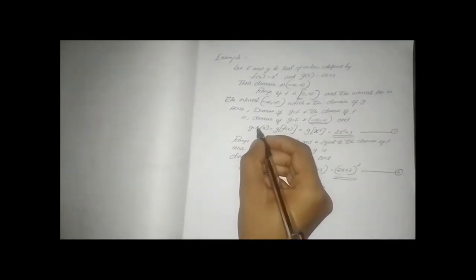So the domain of g∘f is (−∞, ∞). Now, g∘f(x) = g(f(x)). Since f(x) = x², we substitute into g: g(x²) = 2(x²) + 3 = 2x² + 3.